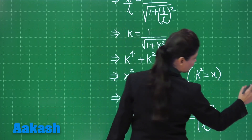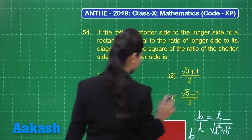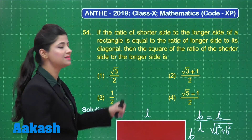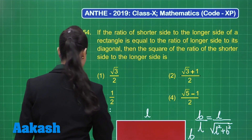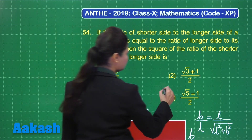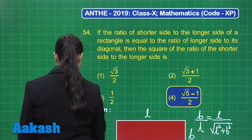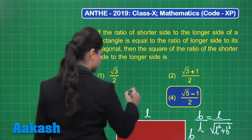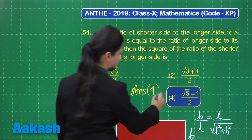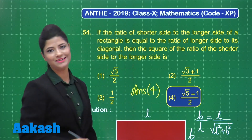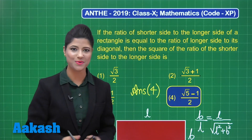So the square of the ratio of the shorter side to the longer side is root 5 minus 1 over 2. Observing the options provided, this value is present in option number 4. We can definitely mark the answer for this question as option 4.